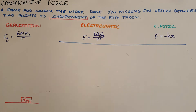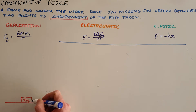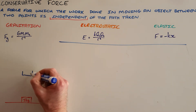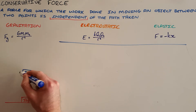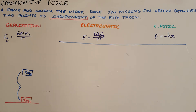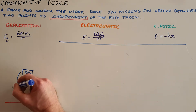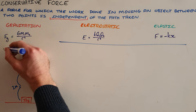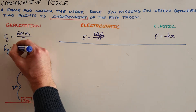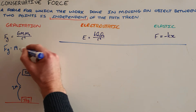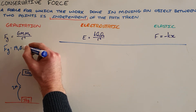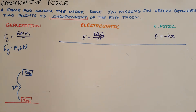We can demonstrate that with an example here where we have a two kilogram object that is taken from rest on the surface of the earth and raised to a height of two meters above the surface of the earth. The work done is against the force of gravity, which is the product of the object's mass and gravitational acceleration — therefore the force of gravity acting on this object is 19.6 newtons.